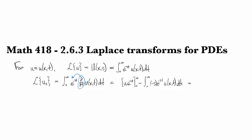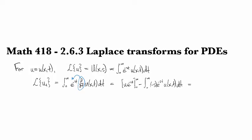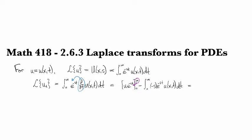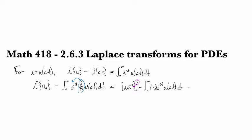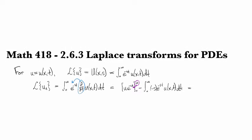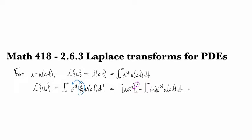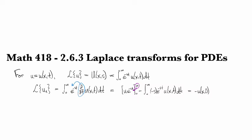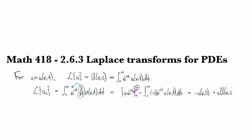And so one of these boundary terms is going to die, namely the one at infinity, because we require our function u to be of exponential order, so e to the minus st will kill it off. And then we're left with minus u(x,0) and s times U(x,s).